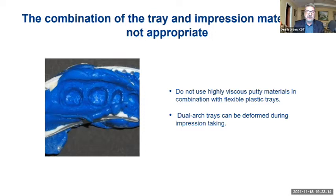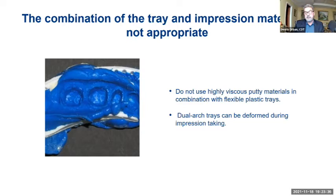Dual arch trays can be deformed during impression taking, even with patients biting down. When taking the dual arch tray impression of the prep and the opposing arch, sometimes the patient bites down into an area of plastic on the tray and starts distorting it. This is when we have problems with our final restoration fit.